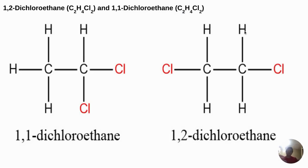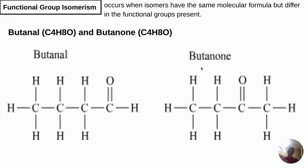Another example: 1,2-dichloroethane and 1,1-dichloroethane. If you check, both have two carbons, four hydrogens, and two chlorines. In 1,1-dichloroethane the two chlorines are found on carbon 1, while in 1,2-dichloroethane the two chlorines are not on the same carbon — one chlorine is at carbon 1 and the other is at carbon 2. Now we move on to functional group isomerism.